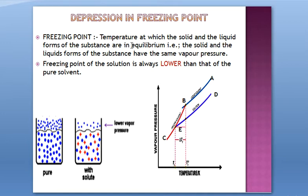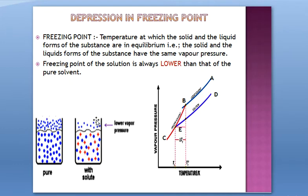At that point, the solid and the liquid forms of the substance have the same vapor pressure. When you freeze something, the vapor pressure of the liquid phase and the solid phase become equal — that is the state of equilibrium, and at that temperature the substance freezes. That temperature is the freezing point. Importantly, the freezing point of the solution is always lower than that of the pure solvent. If you compare a vessel with pure solvent to one where a non-volatile solute has been added, its freezing point will be less.